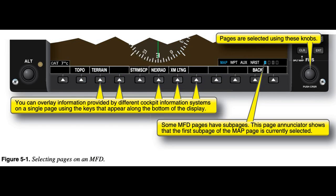Multifunction Display. A multifunction display, MFD, presents information drawn from a variety of aircraft information systems. Many installations allow overlay or inclusion of systems indications in the primary flight display, PFD. In addition to the primary flight instrument indications, by allowing you to view information provided by any one or combination of the installed systems, the MFD prevents the need for a separate display for each system.